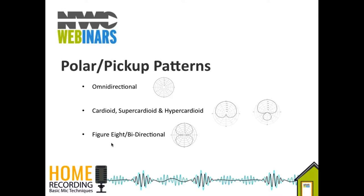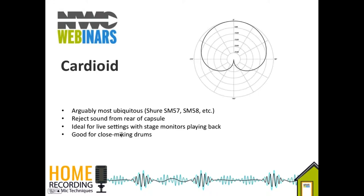We're going to go through each of the different polar or pickup patterns available on microphones. The main ones are omnidirectional, cardioid, supercardioid or hypercardioid — which all follow the basic cardioid shape — and then the figure-eight or bidirectional microphones. The name says a lot for most of them. Adam, pleasure having you here — the cardioid microphone is arguably the most ubiquitous in the industry, and the Shure SM58 may be the most iconic example.